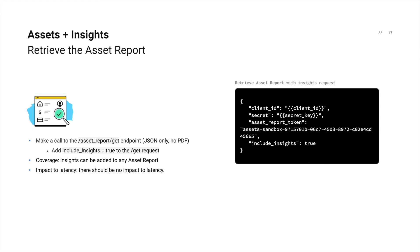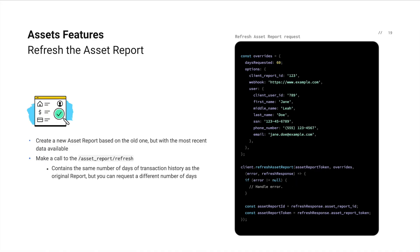This next feature is called assets refresh. Asset reports are immutable, but if you need an up-to-date report — for example, in a long origination process like a mortgage, or if an existing borrower wishes to refinance — you can generate an up-to-date report by calling the asset report refresh endpoint. As with the asset report create endpoint, the report will be ready to retrieve once Plaid sends you a product ready webhook.